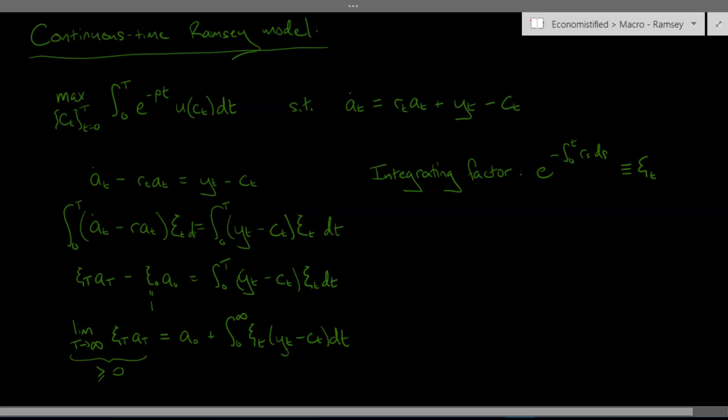this is a constraint that I'm imposing on the household this says that the household's debt cannot grow faster than the interest rate. In other words they can't keep borrowing and borrowing all the time accumulating more and more debt rolling it over and never paying it back I'm ruling that out that's a constraint that I'm imposing on the household and with this constraint we can see that the optimality conditions of the household once we solve this this problem is going to lead this to being exactly equal to zero.